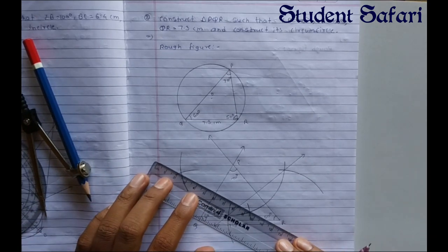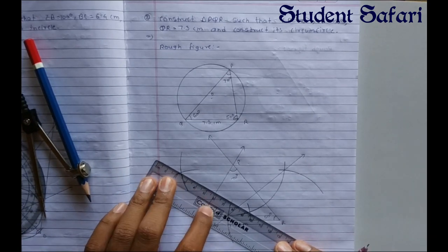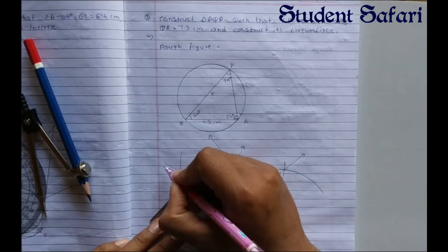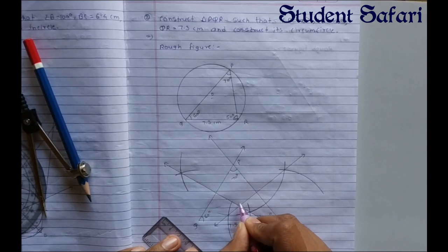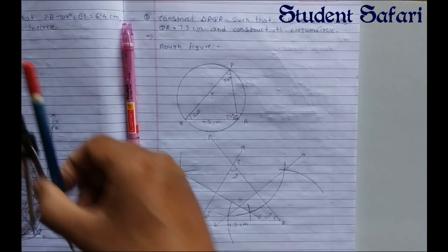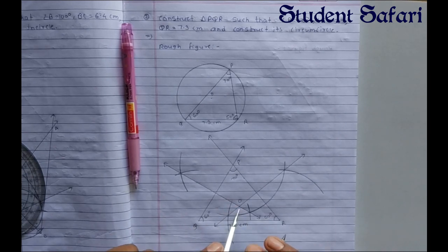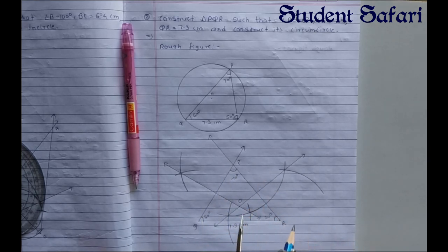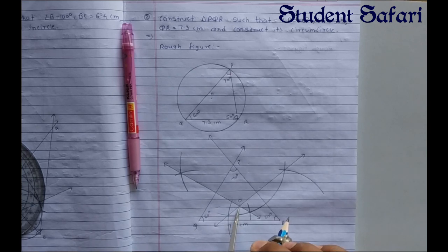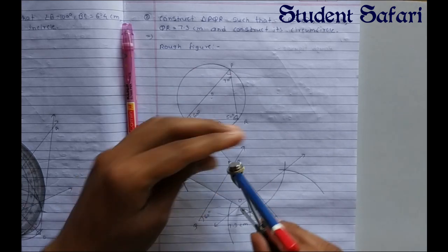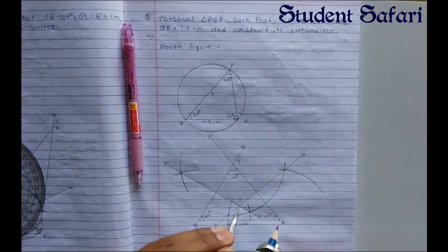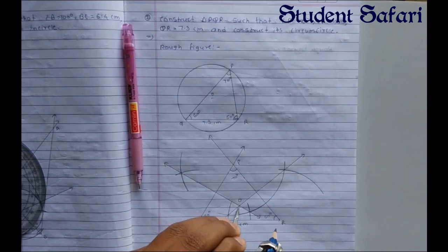After joining the two intersection points of segment PQ, we get its bisector. These two bisectors meet at point O, the center of the circle. The circumcircle is the circle passing through all three vertices of the triangle. Put the compass point on O and take the distance to any vertex — OP, OQ, or OR — all distances are equal.